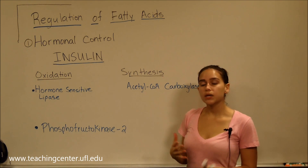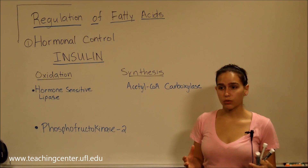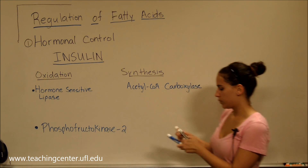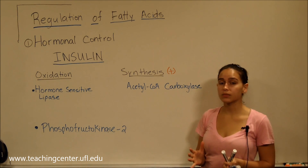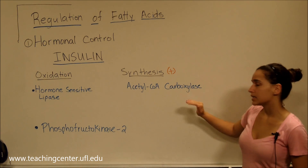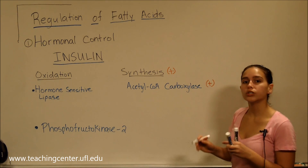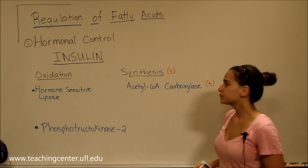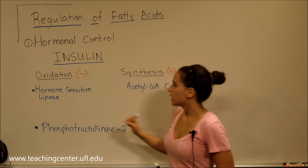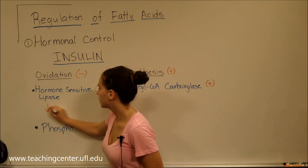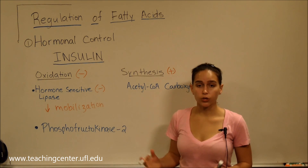After eating a high-carb or high-fat meal, insulin is released. We want to store that fat or glucose for later energy use, so synthesis is going to be activated. Insulin causes dephosphorylation of certain enzymes, activating or deactivating them. Dephosphorylation of acetyl-CoA carboxylase by insulin activates it, because now we want to make fats and store them. Oxidation is inhibited by dephosphorylation via insulin, and so is hormone-sensitive lipase — we decrease mobilization of fats because we're storing them.